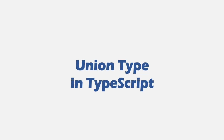In this lecture, we are going to talk about another type in TypeScript called Union Type. Union Type is used to specify that a variable, function parameter, or return type can be one of several possible types. Let's try to understand Union Type with an example.